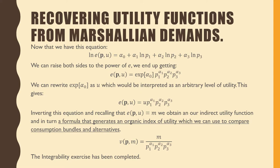Now that we have this equation, we could raise both sides to the power of e and end up with our expenditure function equal to e^(α_0) times p_1^(α_1), p_2^(α_2), p_3^(α_3). We can rewrite the exponentiation of α_0 as u, because that's just an arbitrary level of utility. It's just a value. This gives us the same equation as before, but we put a u in the place of the exponentiation of α_0.